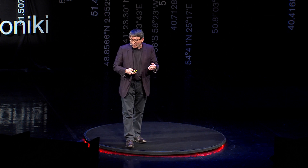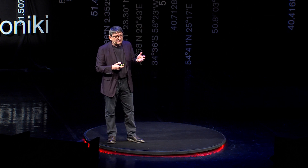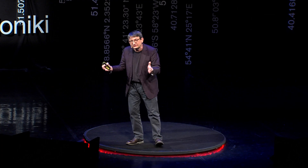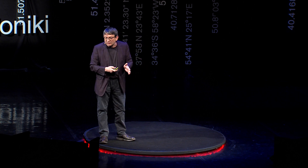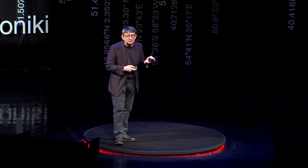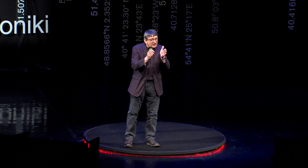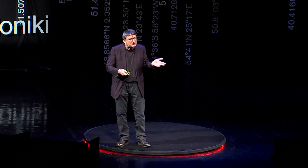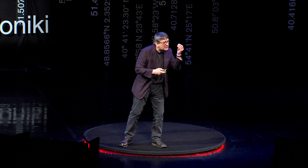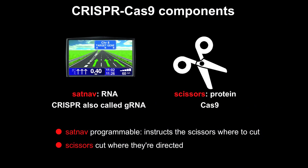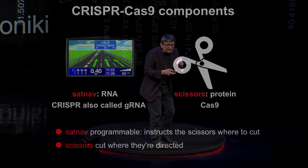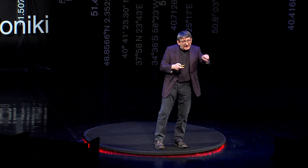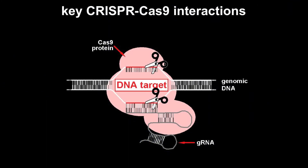Although CRISPR-Cas9 doesn't do anything we couldn't do before, it does it so much better that it's a game-changer. So how does it work? It works in two ways: the CRISPR-Cas9 first makes a break in the genome, and then the cell repairs that break. The CRISPR-Cas9 works like a pair of tiny molecular scissors and a molecular sat-nav that you program to go to exactly the location in the genome where you want it to cut, telling the scissors where to go. It's an amazing system, really.